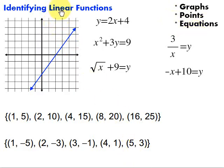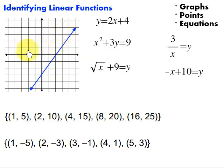A linear function — notice from its name: linear contains the word 'line,' and function. To be a function, a couple of things we can do to determine that: if we graph the points or the line, it has to pass the vertical line test. The vertical line test says that a vertical line cannot intersect the graph more than one time at any point. And linear means it has to be a straight line.